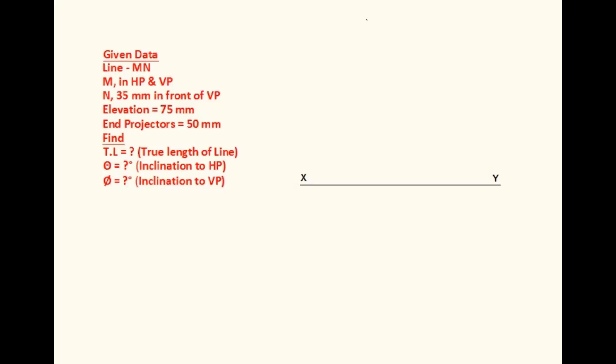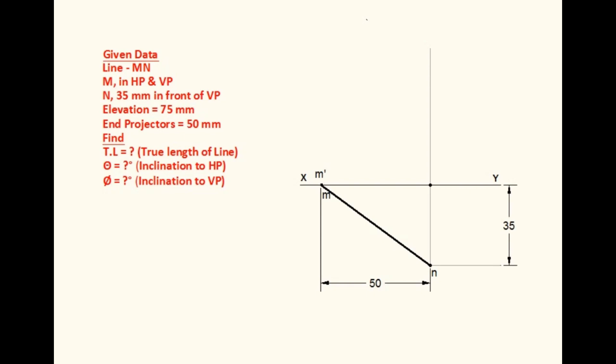Let us see the drawing procedure. Draw an XY line first. Since the end point M of the line is in both HP and VP, its elevation and plan will be on the XY line itself — elevation is M dash and plan is M. The projector of the other end point N is 50mm away; mark a point on the XY line 50mm from the projector of point M, and draw a vertical projector through this point. Point N is 35mm in front of VP, so its plan will be 35mm below the XY line. This point is N.